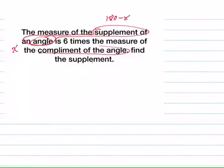And the complement of the angle is going to be 90 minus X. So it says the supplement, which is 180 minus X, is six times the measure, equals six times the measure of its supplement.